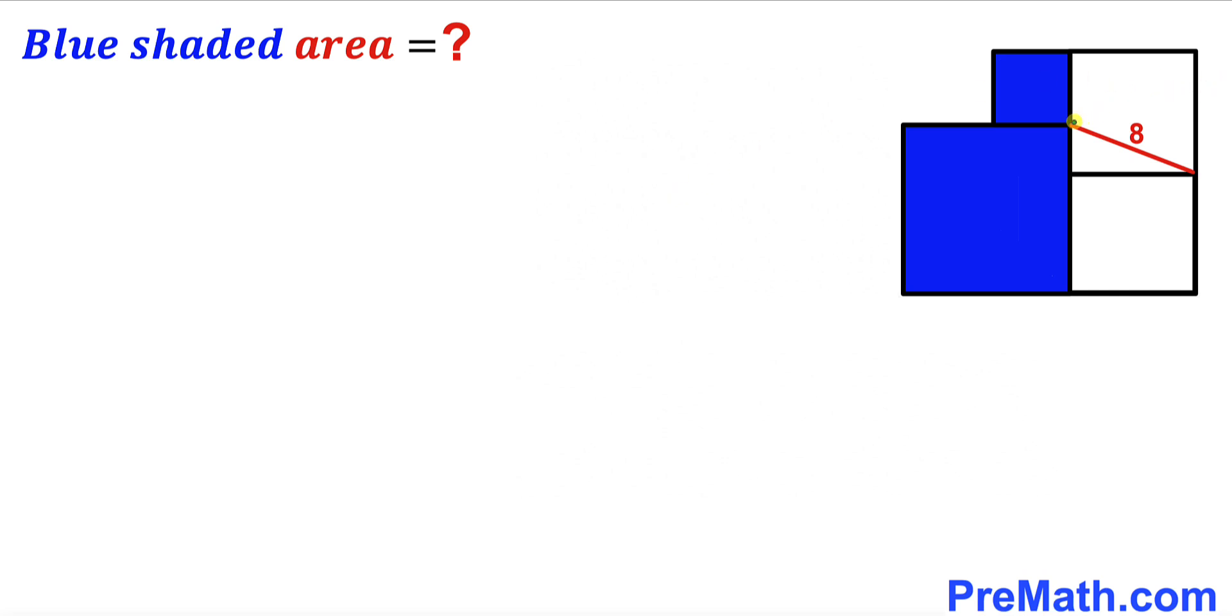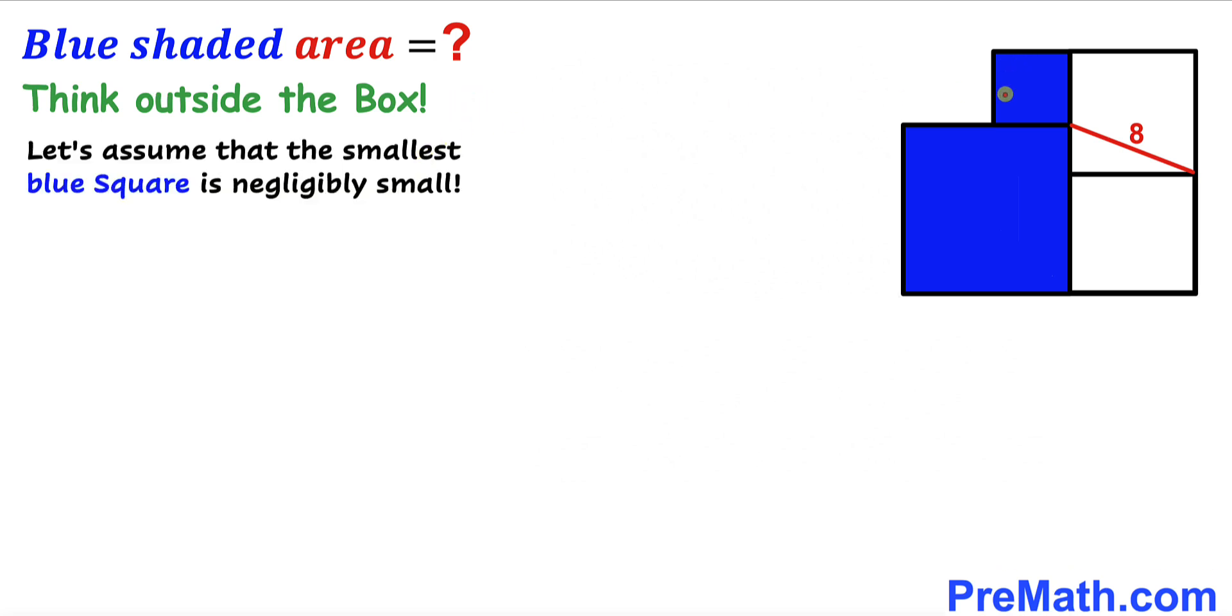The only info given to us is that this segment is 8 units. Now let's make an observation. We can see the dimensions of these blue squares are not fixed. So we're going to think outside the box and assume that this small blue square is negligibly small.